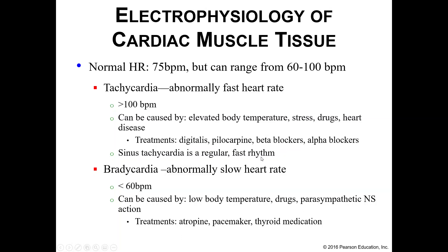If we stay too low for too long, we can try a few things to fix it: atropine, a pacemaker if something has happened to your SA node so it no longer functions properly, or even thyroid medications. Any of these will increase heart rate back to normal. Your autonomic nervous system does help control your heart rate as an external source of control — those pacemaker and contractile cells can function on their own, but the autonomic nervous system adds an extra layer.